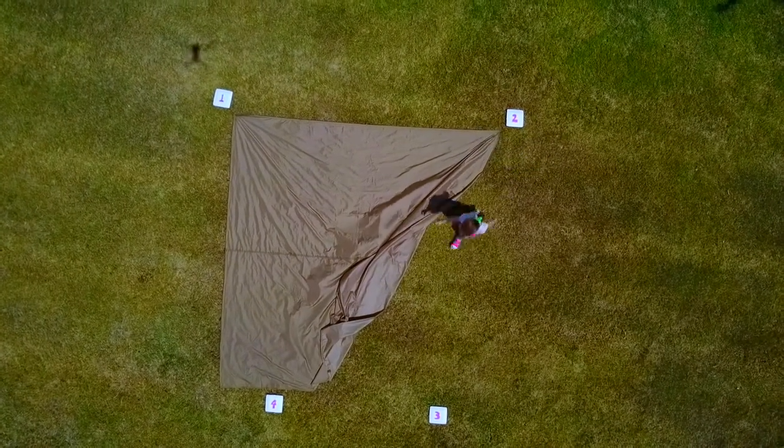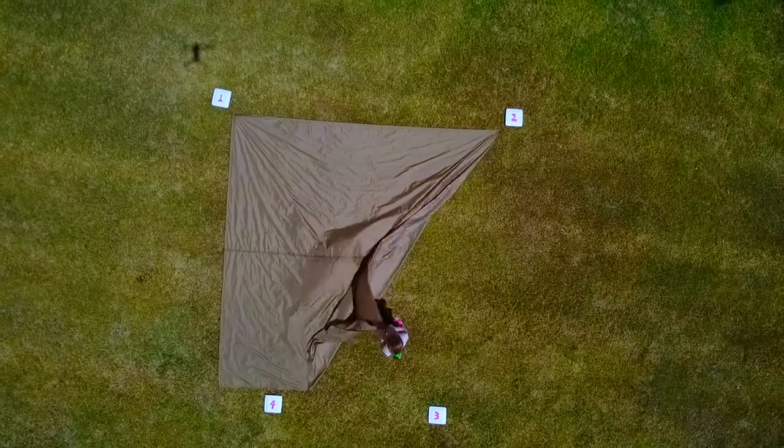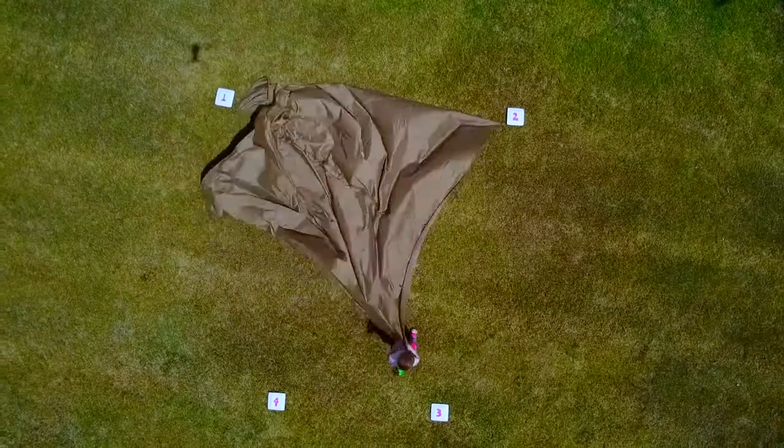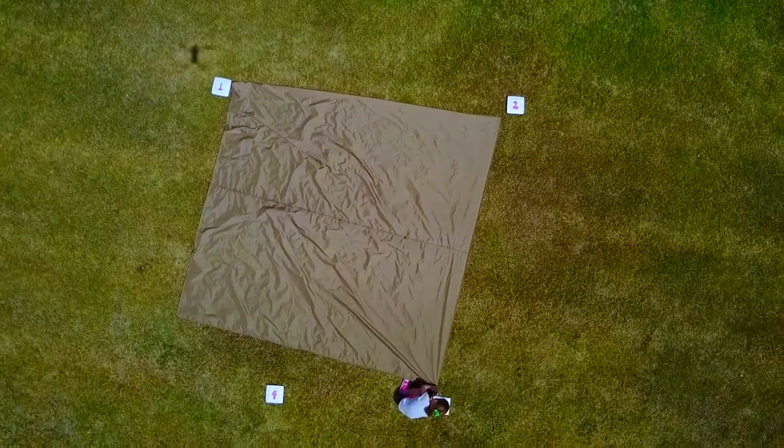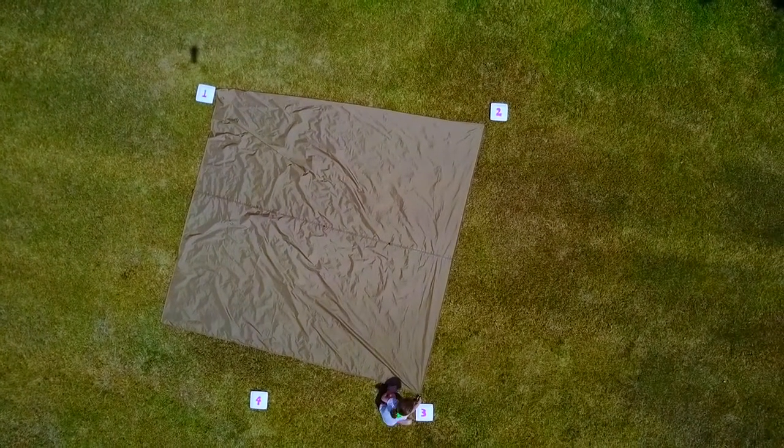Next you want to install your front tent sticks. You want to do that about two feet from the corner of the tarp. This is number three and number four in the video.